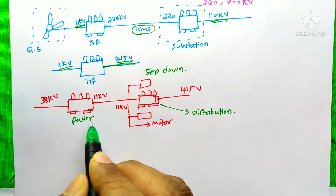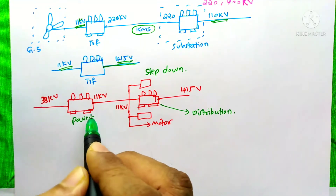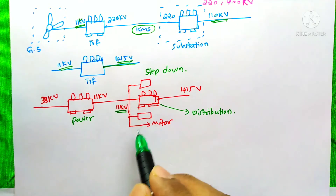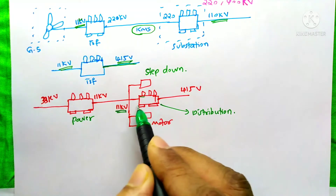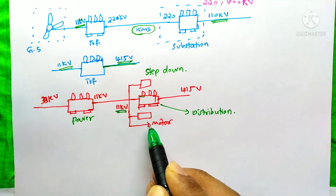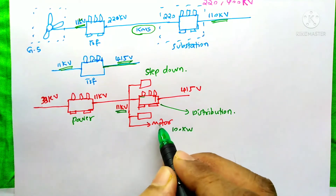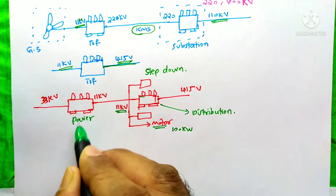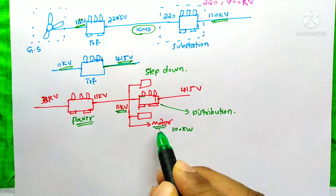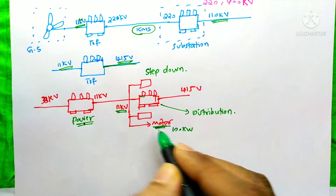We would not connect any load directly to the power transformer, but in some cases there is an exception. Suppose in an industry there is a power transformer converting 33 kV to 11 kV, and on the secondary side there is a bus bar with a number of distribution transformers converting 11 kV to 415 V. On that same bus bar, we can take a single connection directly to a large motor — maybe 100 kW or 200,000 kW — because that motor needs 11 kV power. In the case of big motors, we give a direct connection from the power transformer. Big motors always need three conductors, meaning three phases, and do not require the neutral conductor.